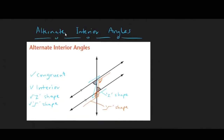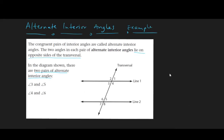Alternate interior angles are congruent angles which are inside the two parallel lines but lie on opposite sides of the transversal. Usually they form a Z shape or an S shape. In our diagram, angles 3 and 5, and angles 4 and 6, qualify as alternate interior angles because they lie on opposite sides of the transversal.